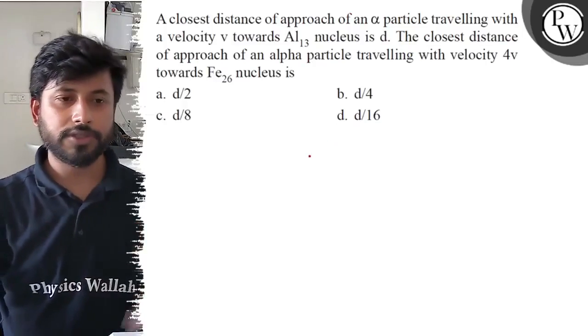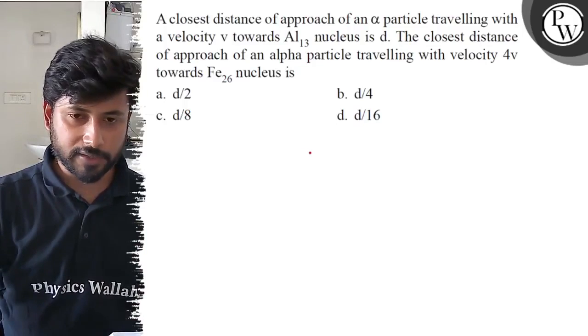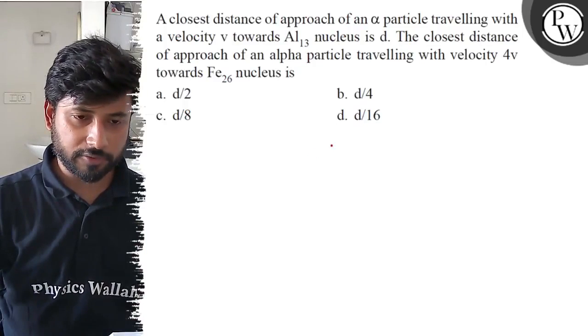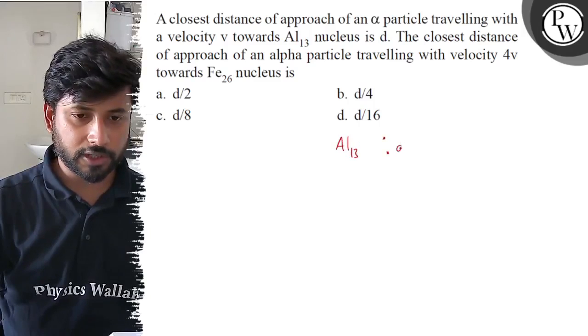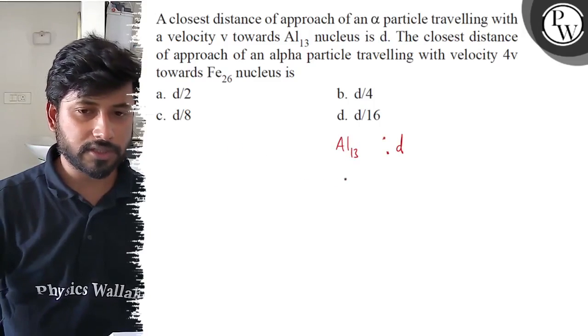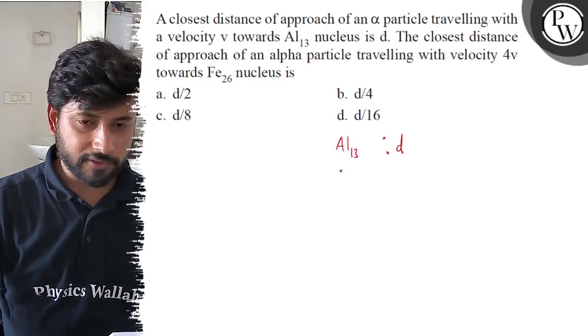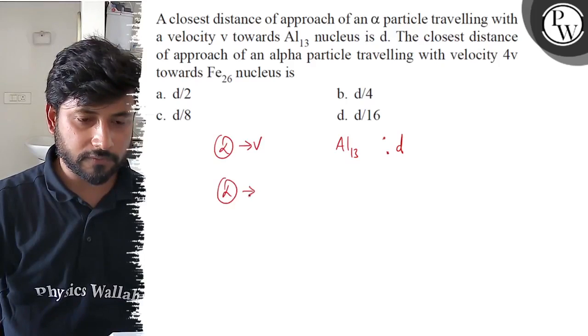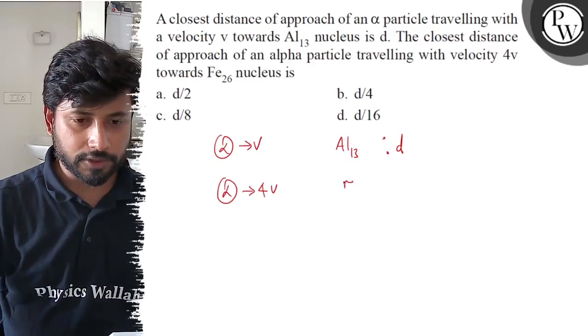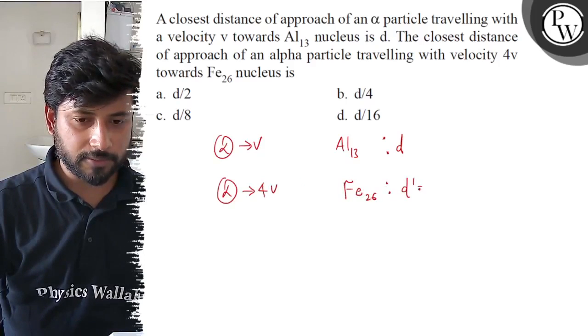Hello Bachchan, let us see this question. The closest distance of approach of an alpha particle travelling with a velocity V towards aluminium-13 nucleus is D. The closest distance of approach of an alpha particle travelling with a velocity 4V, in the first case an alpha velocity V and the other case an alpha velocity is 4V, approaching the iron nucleus. What is the distance of closest approach?